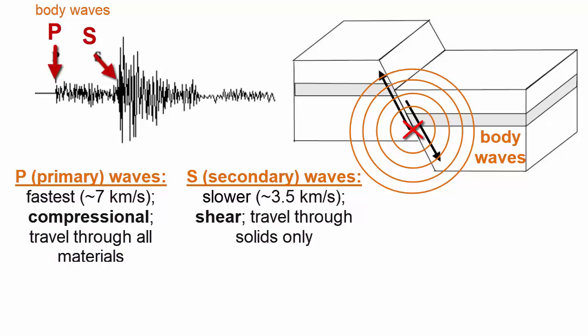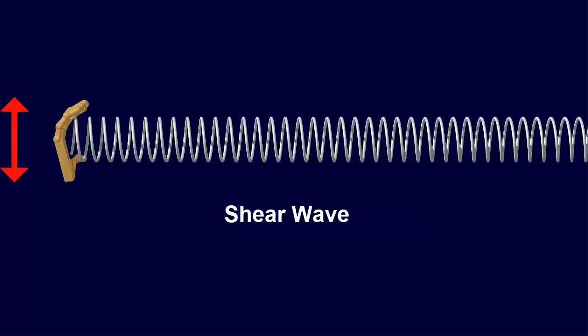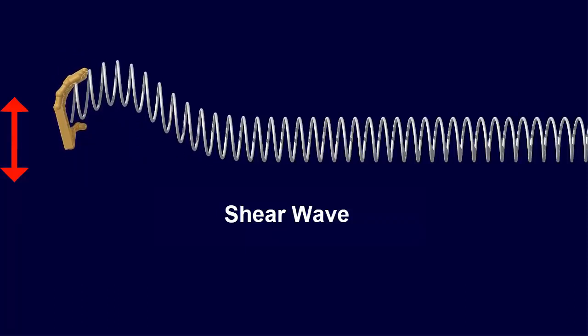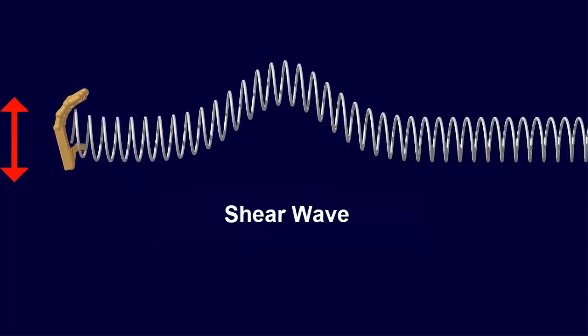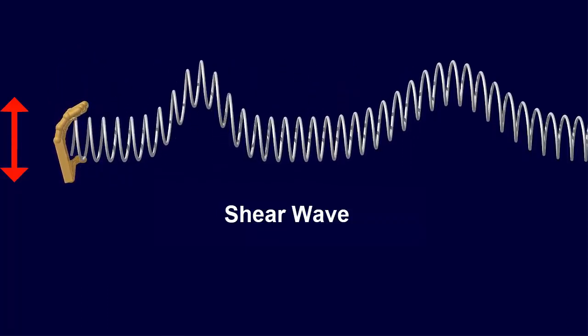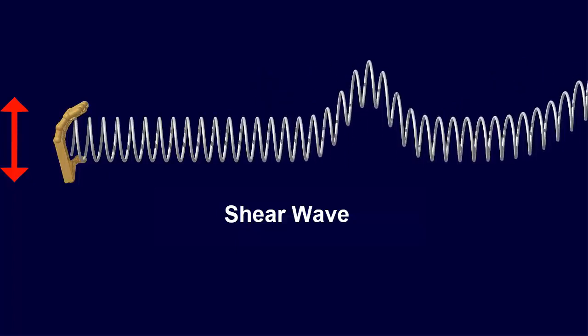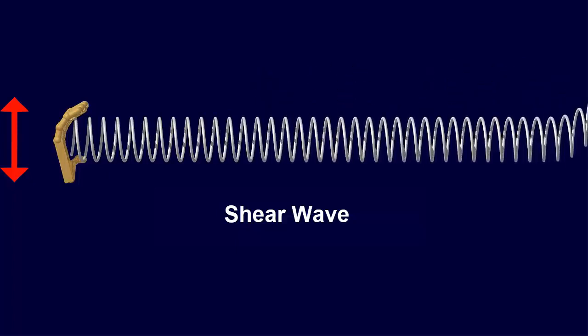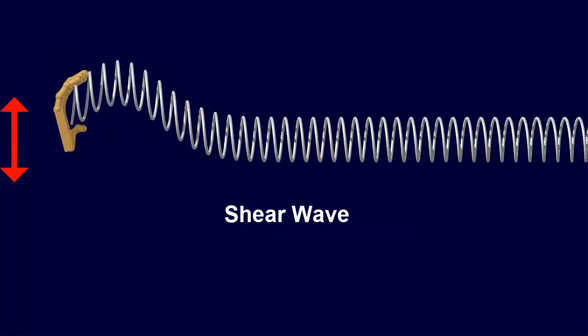The second type of body waves are shear waves and slower on average 3.5 kilometers per second. These waves arrive second at the seismograph station and are called secondary waves or S waves. As you see here with the slinky, shear waves cause the individual slinky pieces to move up and down relative to each other as the energy passes through. Because only solid materials are capable of shear, S waves can travel only through solids.